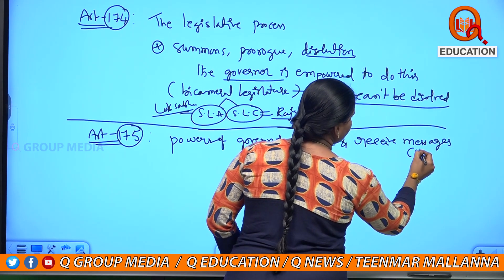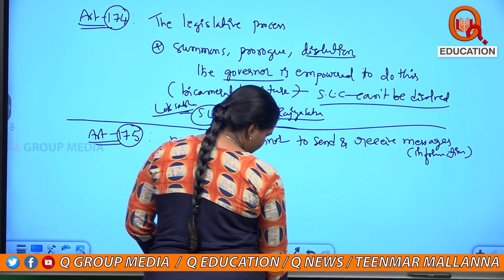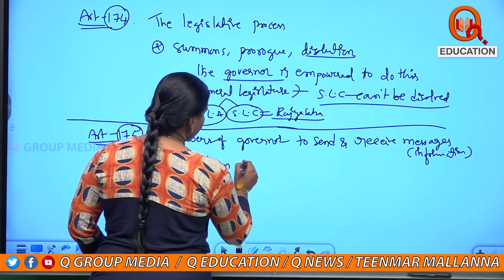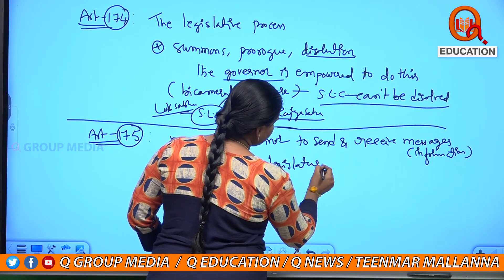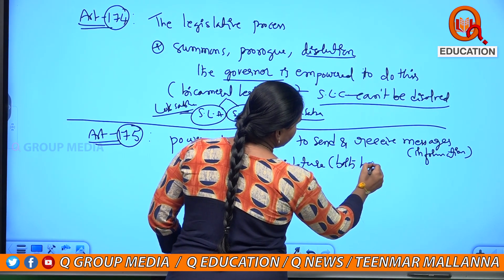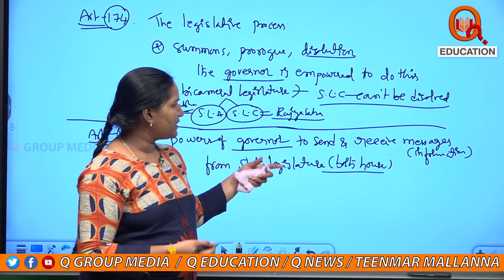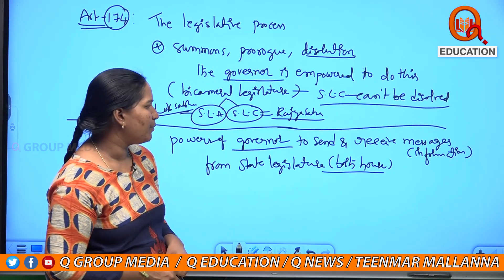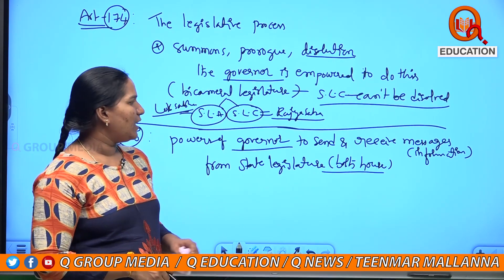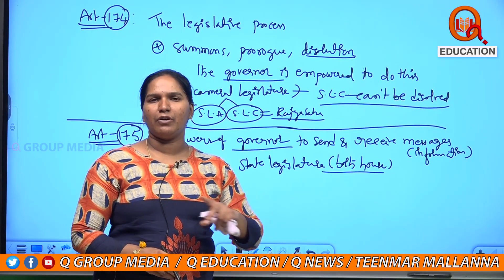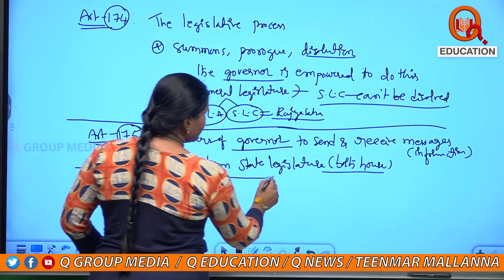The governor can send information and receive information from both houses of the state legislature. The governor can call them, ask them, or send any messages — from the central government or from any people's request. Article 175 deals with this power.